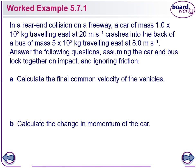Calculate the final common velocity of the vehicles. Now the very first thing I would do with anything like this is draw a diagram. There's our car, there's our bus — they're both traveling in the same direction. That mass is 1×10³, that mass is 5×10³. Our speeds are 20 meters per second and over here 8 meters per second.